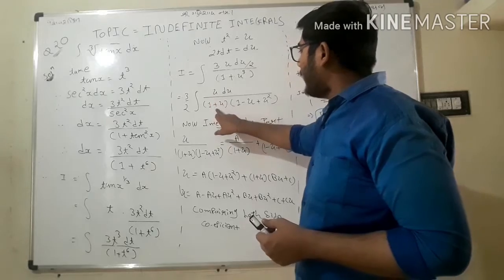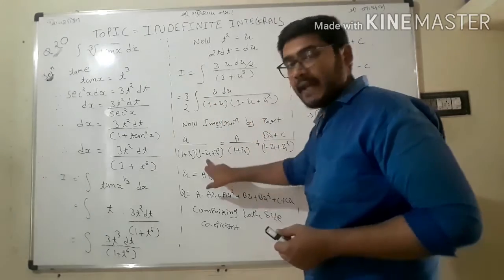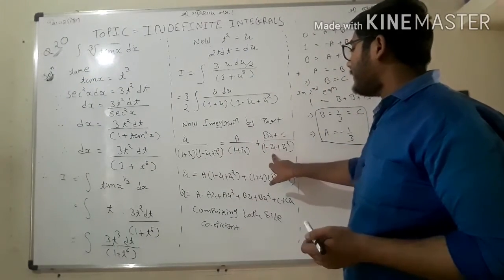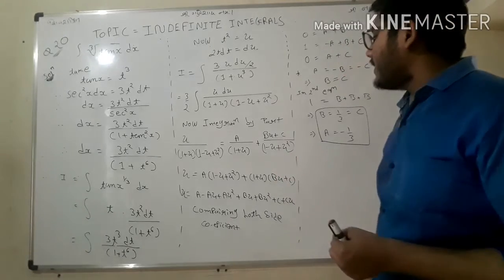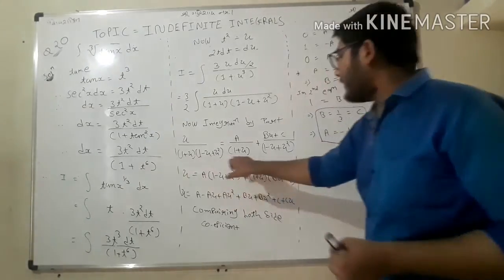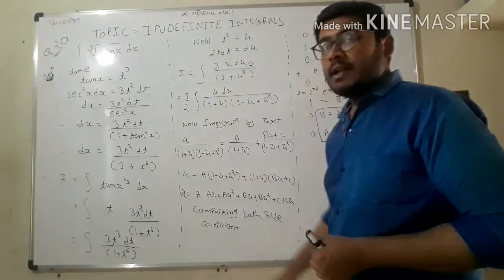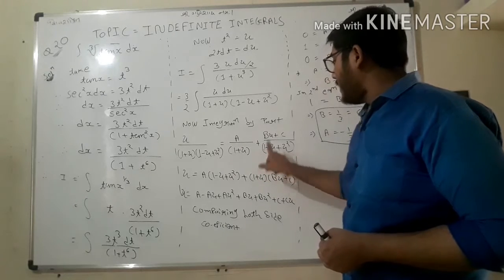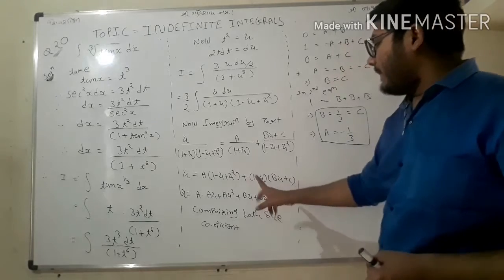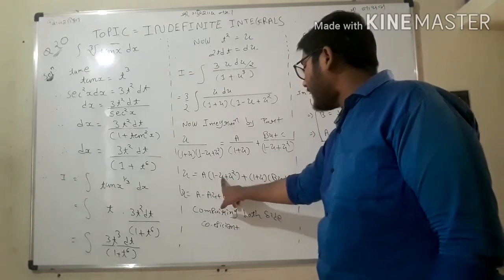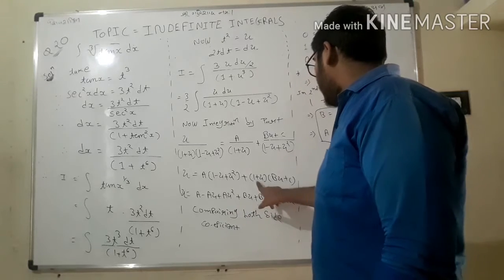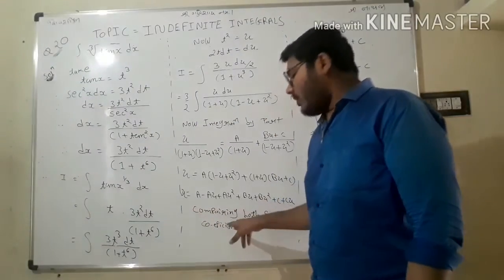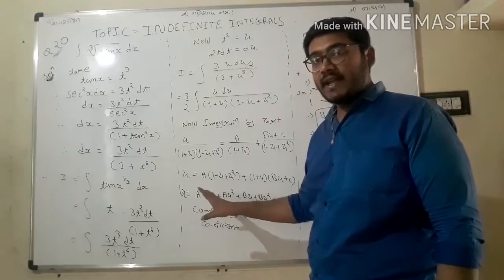We write u upon (1+u)(1-u+u²) as A/(1+u) plus (Bu+C)/(1-u+u²). Cross-multiplying and the fourth term cancels, we get A(1-u+u²) plus (Bu+C)(1+u) equal to u. We now compare coefficients on both sides.